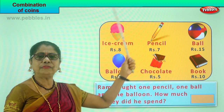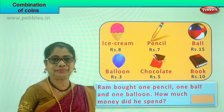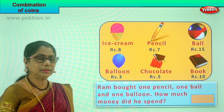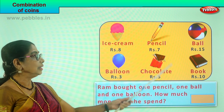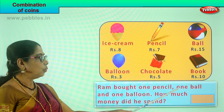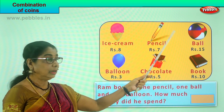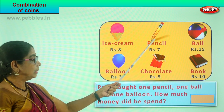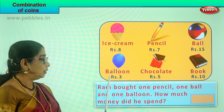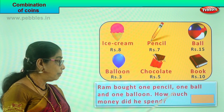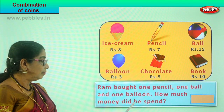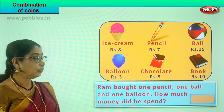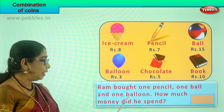What have you decided to buy from the shop? Ram bought one pencil, one ball, and one balloon. Here is Ram — he is taking a pencil, a ball, and a balloon. The question is: how much money did he spend, or how much money should Ram give the shopkeeper? What is the total amount for a pencil, ball, and balloon?